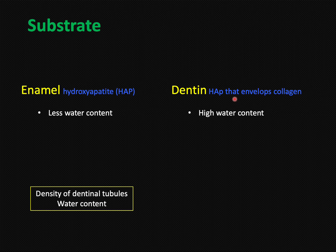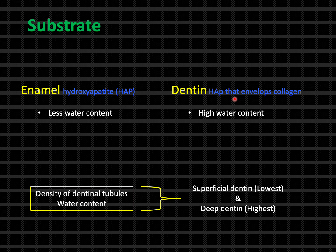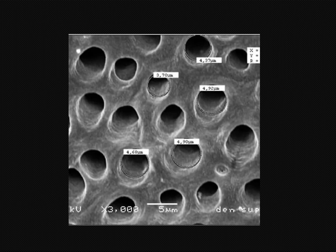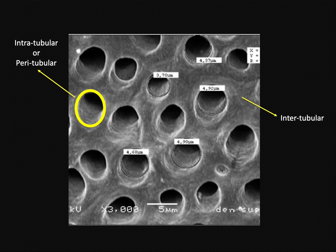We should also understand the relationship of water and density of dentinal tubules. Obviously, more tubules means more water. Superficial dentine has less dentinal tubules than deeper dentine. So the clinical significance is that bonding will be more predictable on superficial dentine because it has less tubules, so obviously less water. Whereas bonding to deeper dentine is a little challenging because it has more tubules and definitely more water. This is the SEM image of the dentine — you can see the intratubular or peritubular dentine and the intertubular dentine.